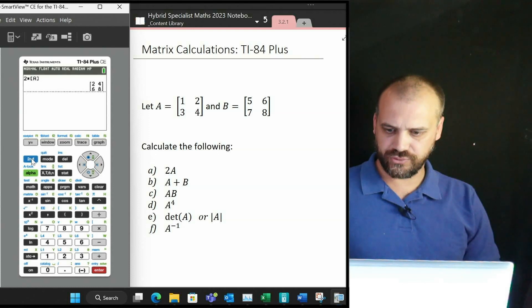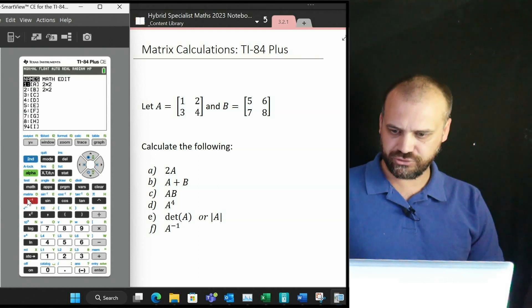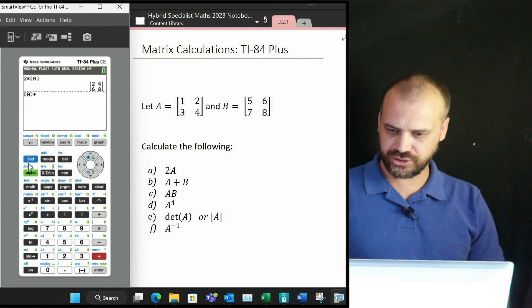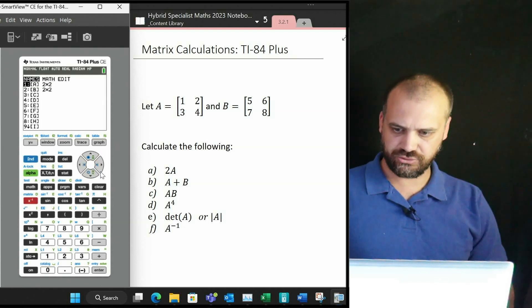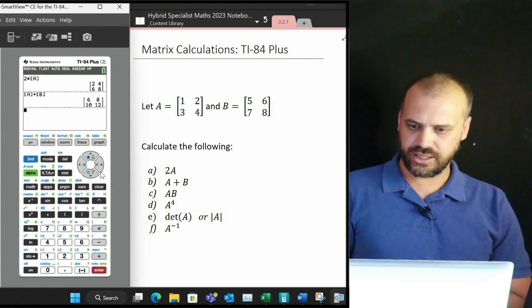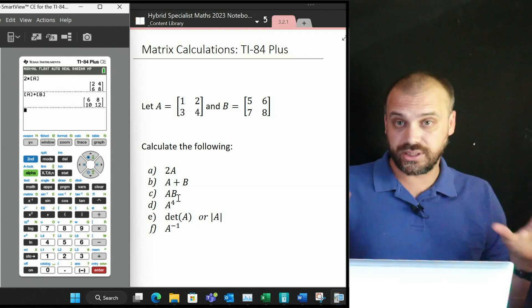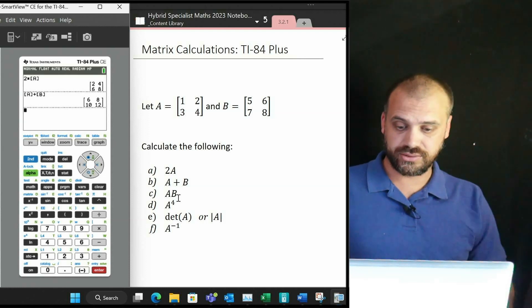From here really straightforward: second function matrix, choose the matrix you want, I want matrix A, plus, and then second function matrix, choose the matrix you want B, enter. A plus B. Now the next one is A times B, and you do it exactly the same way—easy, straightforward.